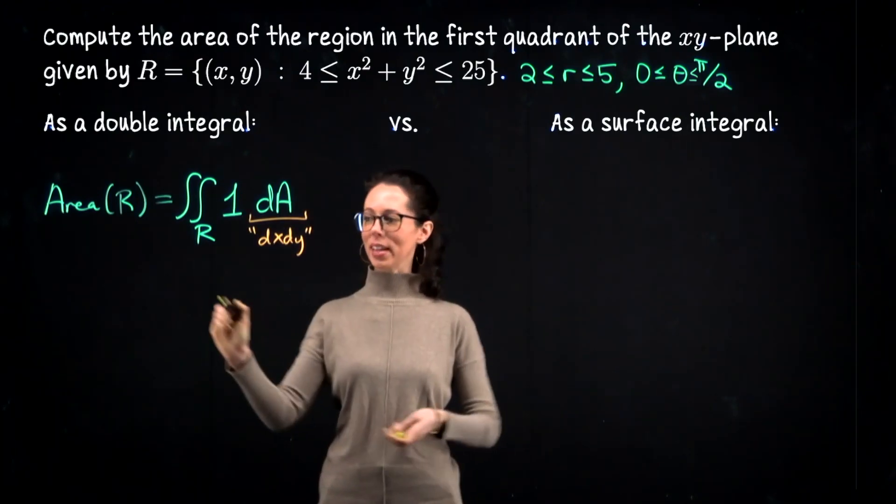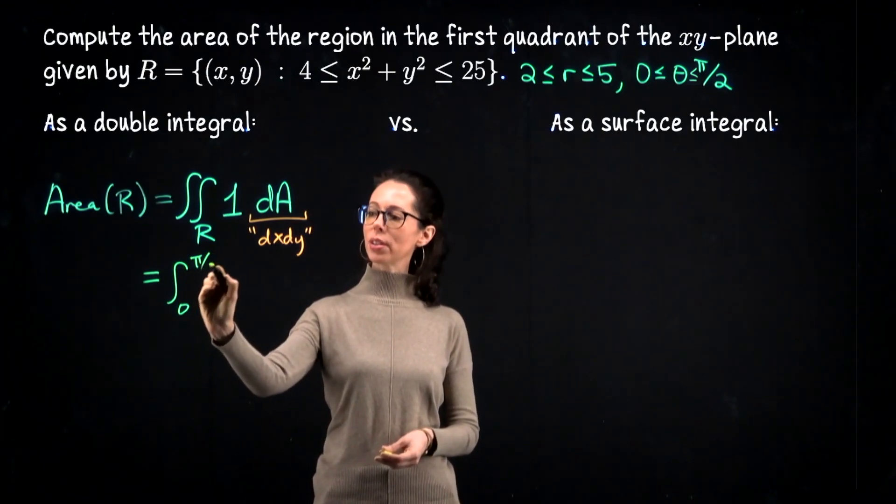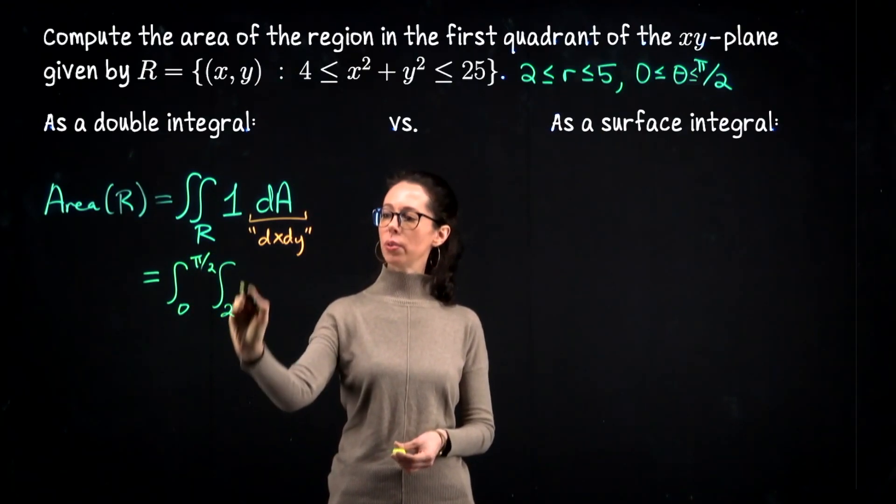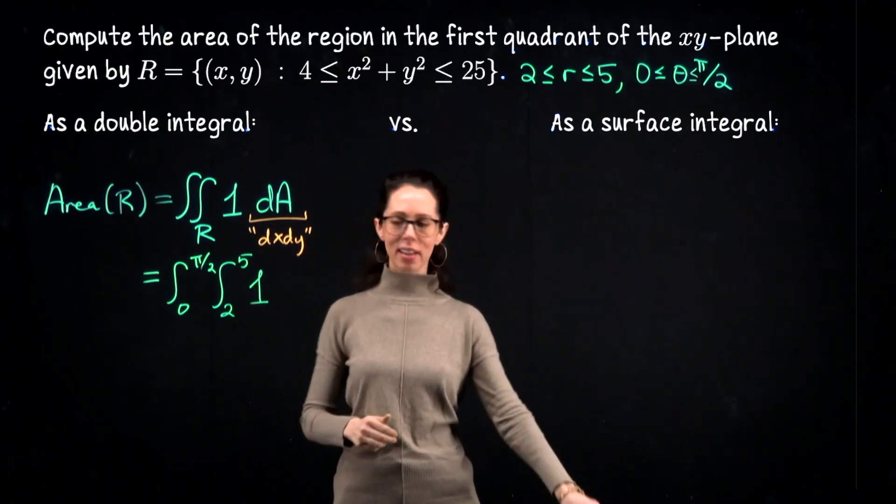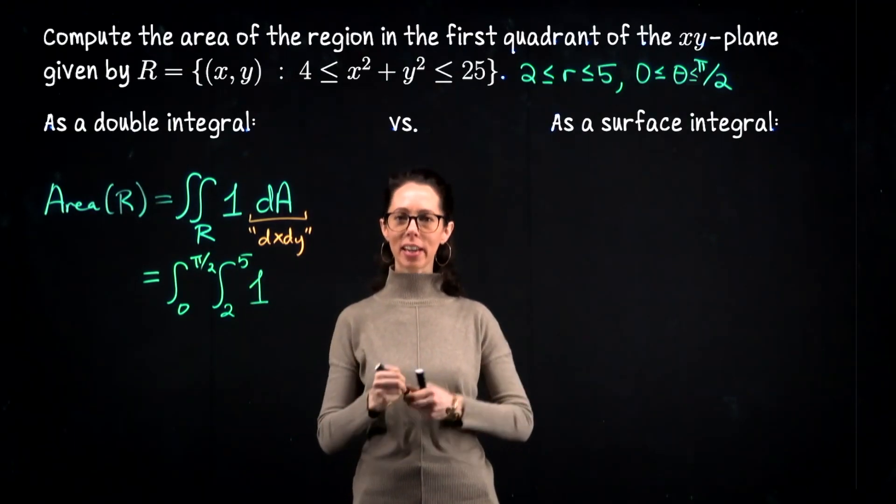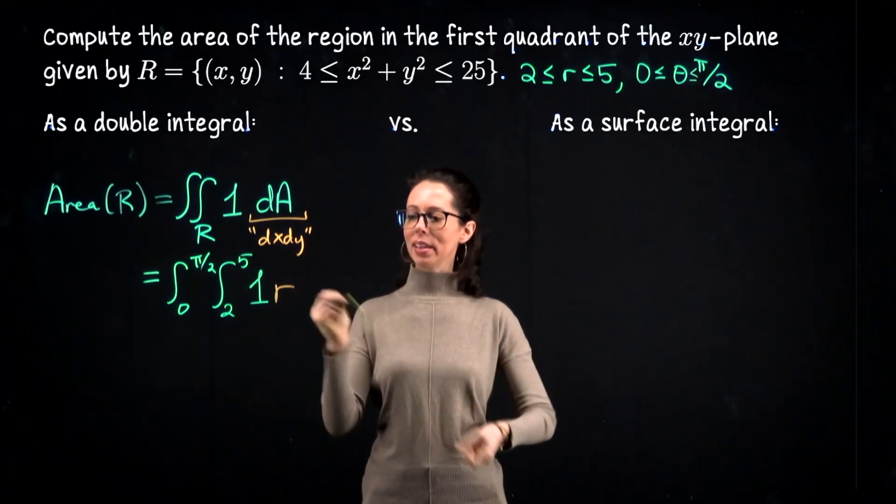Now to evaluate this, for the outer bounds we can go from 0 to π/2, and then for the inner bounds from 2 to 5. And then because we're converting from rectangular into polar coordinates, I need to pick up a factor of r, then dr dθ.